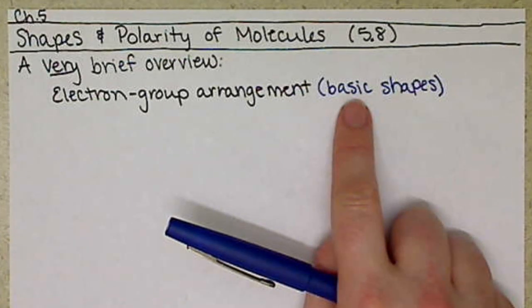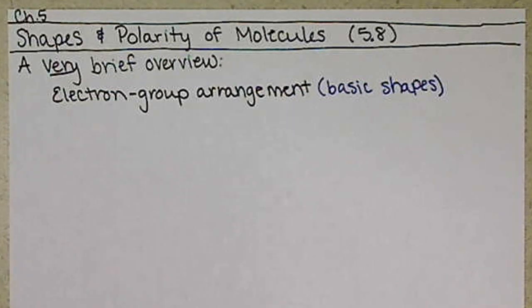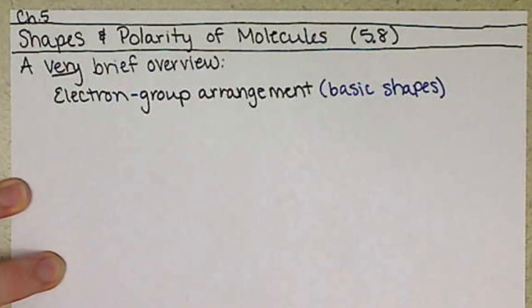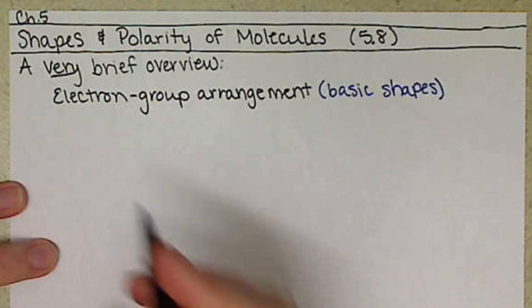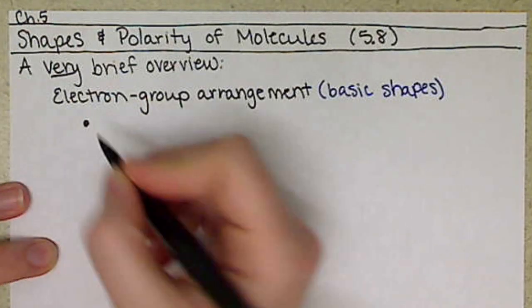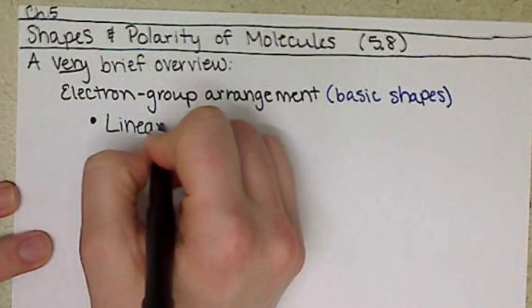Okay, so our electron group arrangements, we want to focus on three of them. There are more, but we just want three of them. And the first one is called linear.